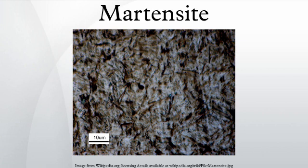Martensite has a lower density than austenite, so that the martensitic transformation results in a relative change of volume. Of considerably greater importance than the volume change is the shear strain, which has a magnitude of about 0.26 and which determines the shape of the plates of martensite.